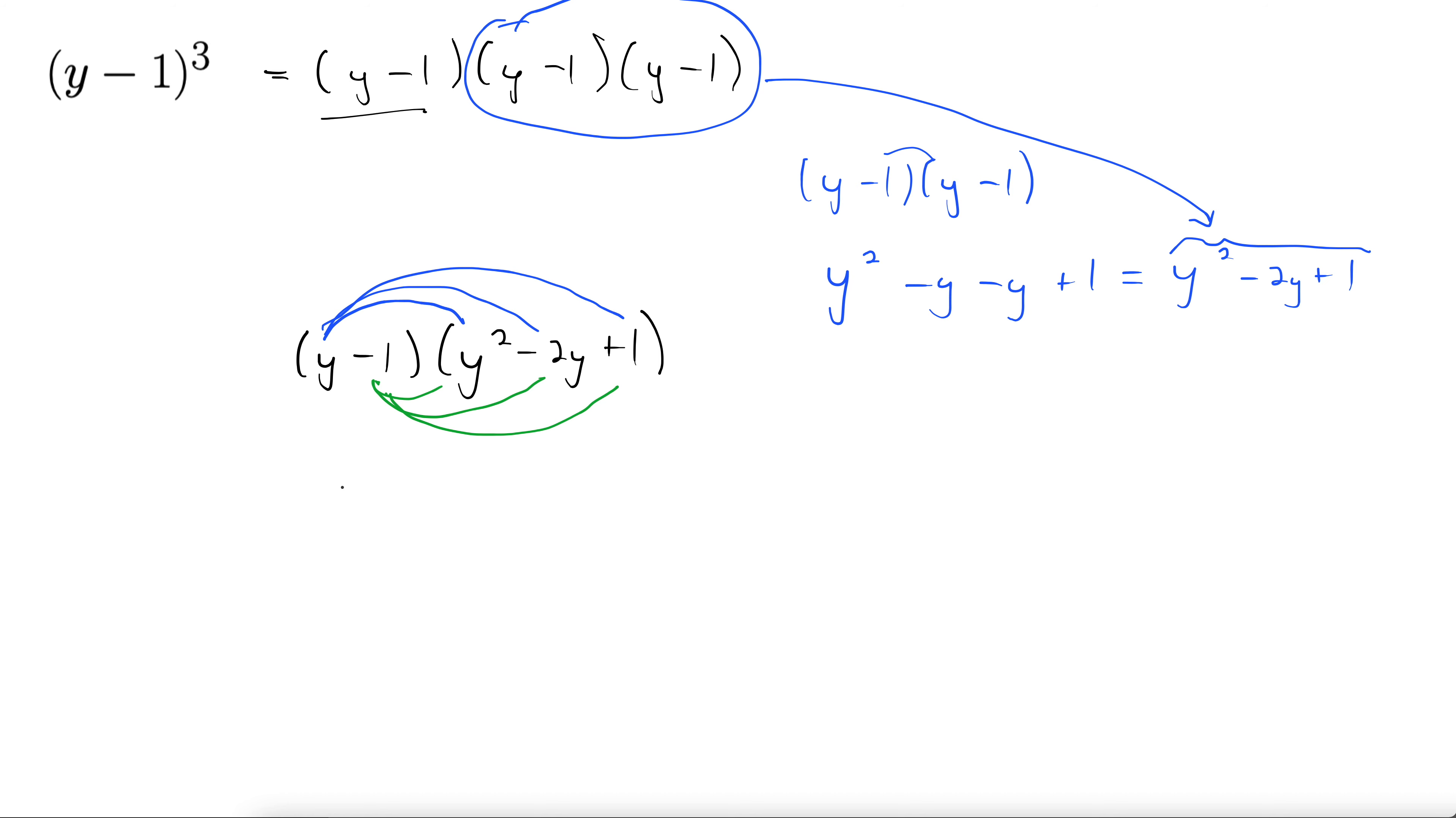So y times y squared, y cubed. y times negative 2y, minus 2y squared. Y times 1, well, I like that, plus y. Minus 1 times y squared is just minus y squared. Minus 1 times minus 2 is plus 2y. Minus 1 times 1, minus 1.